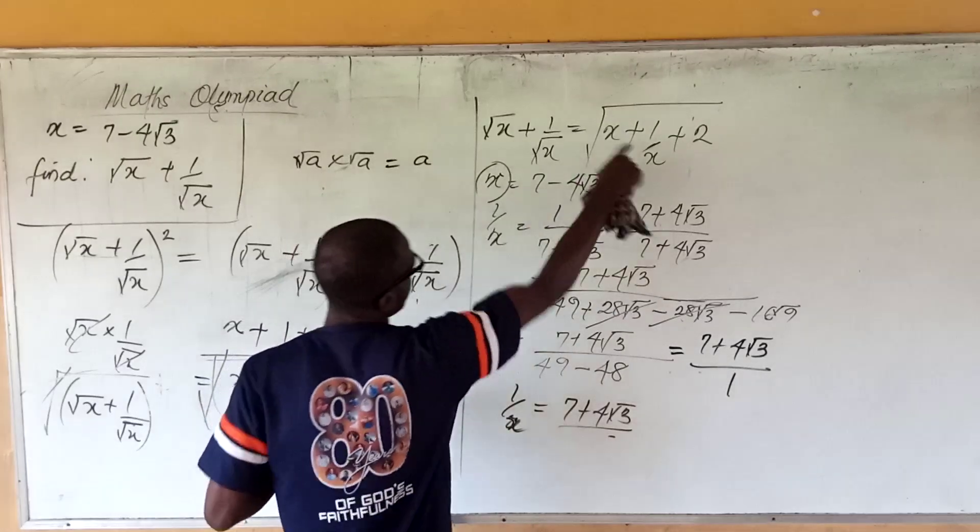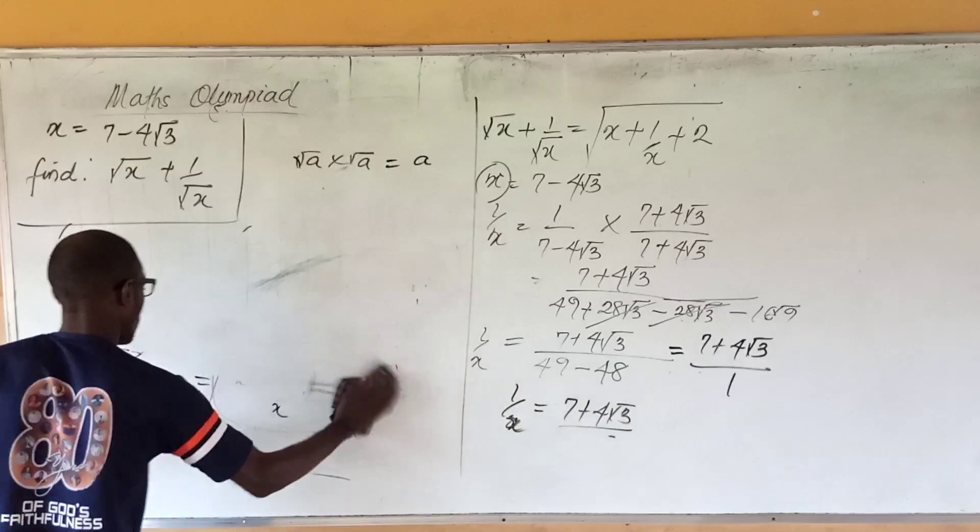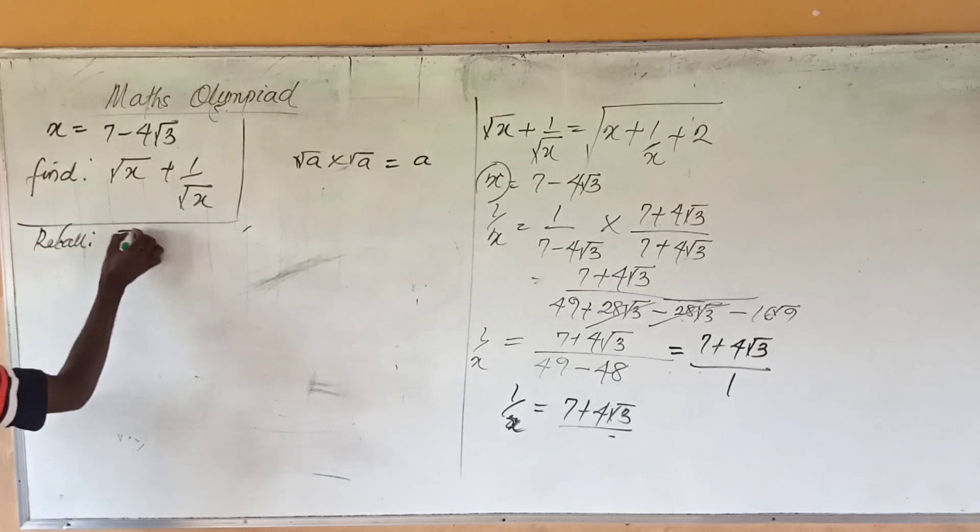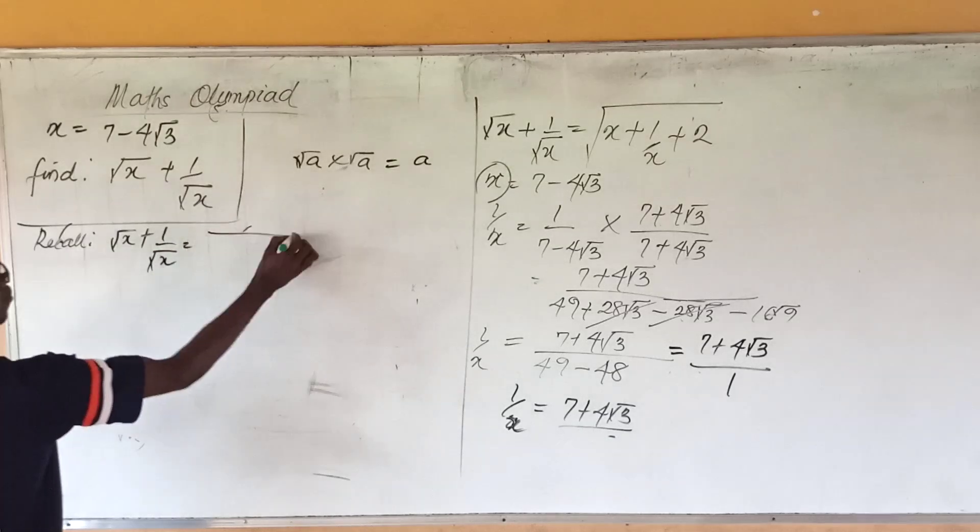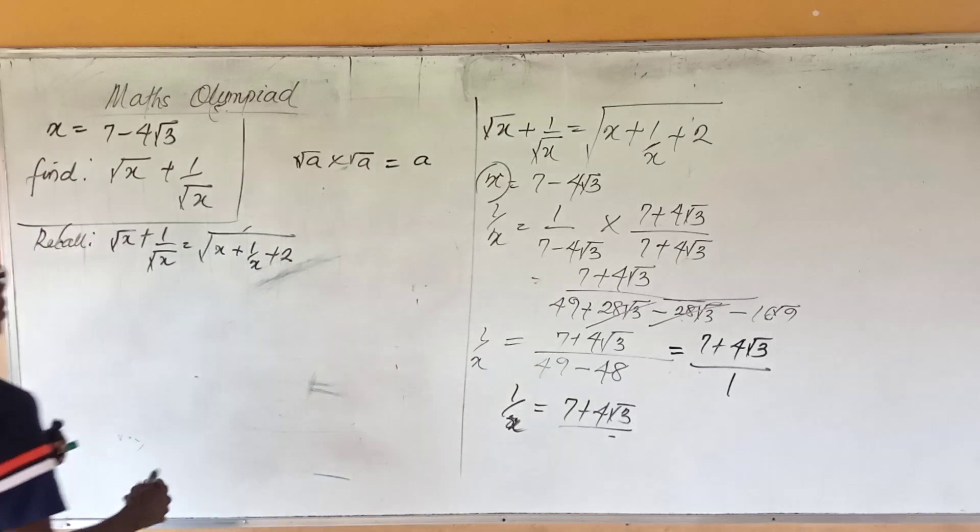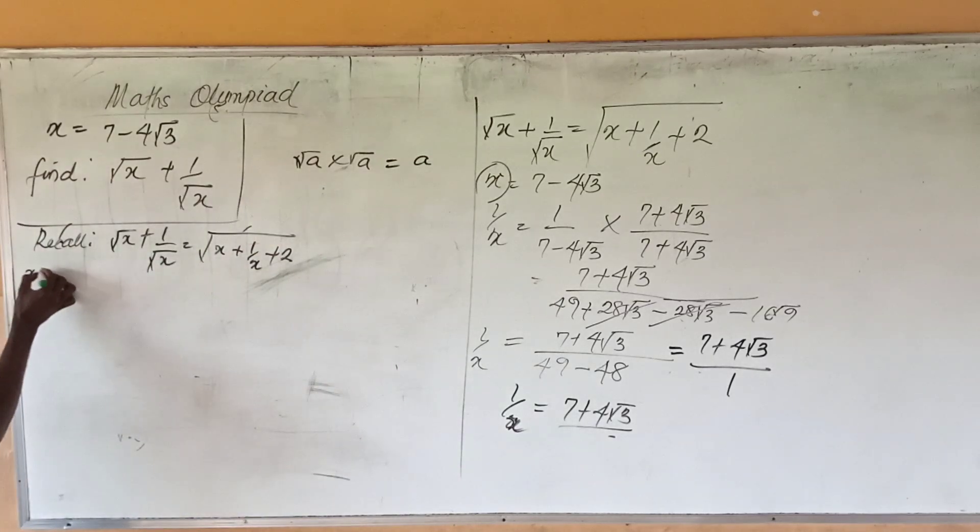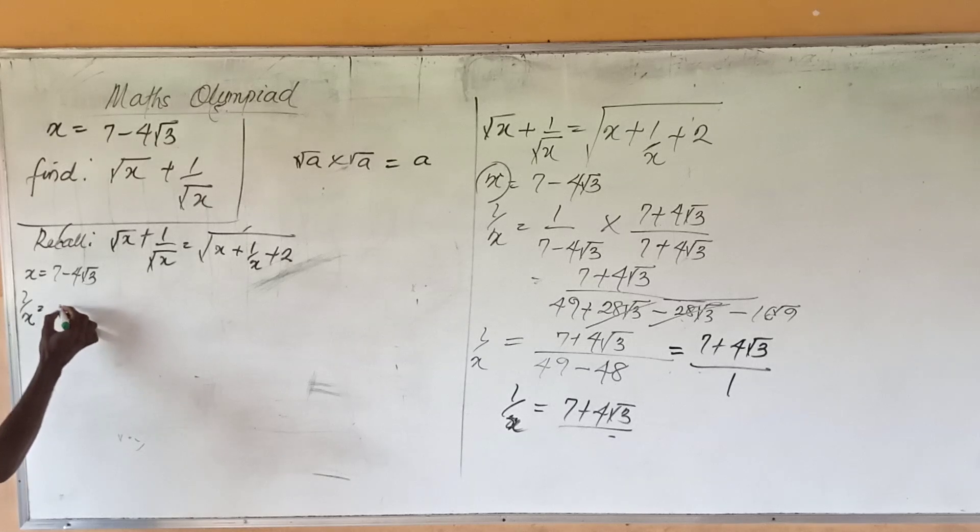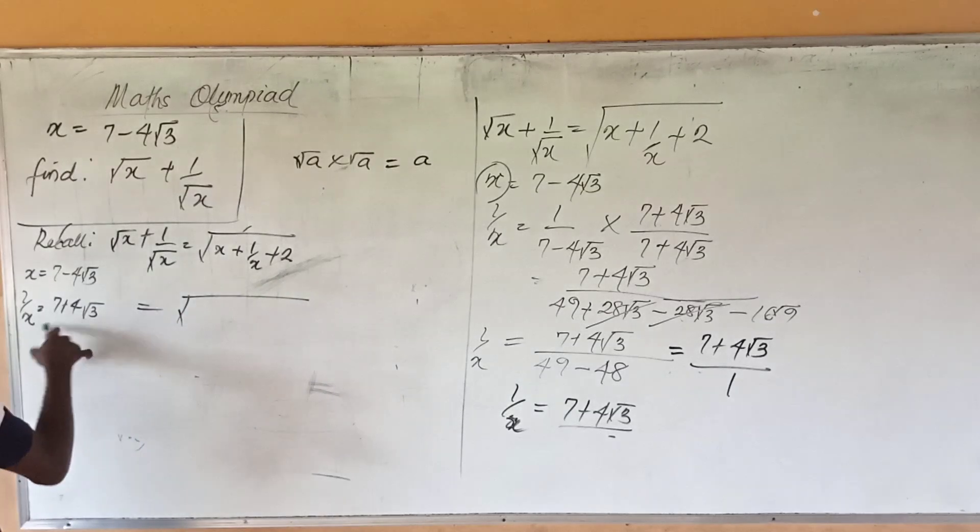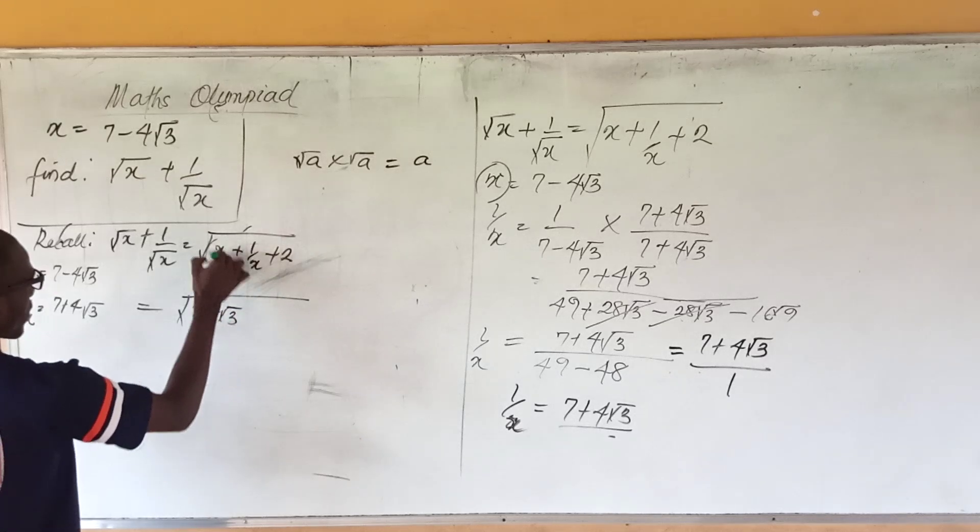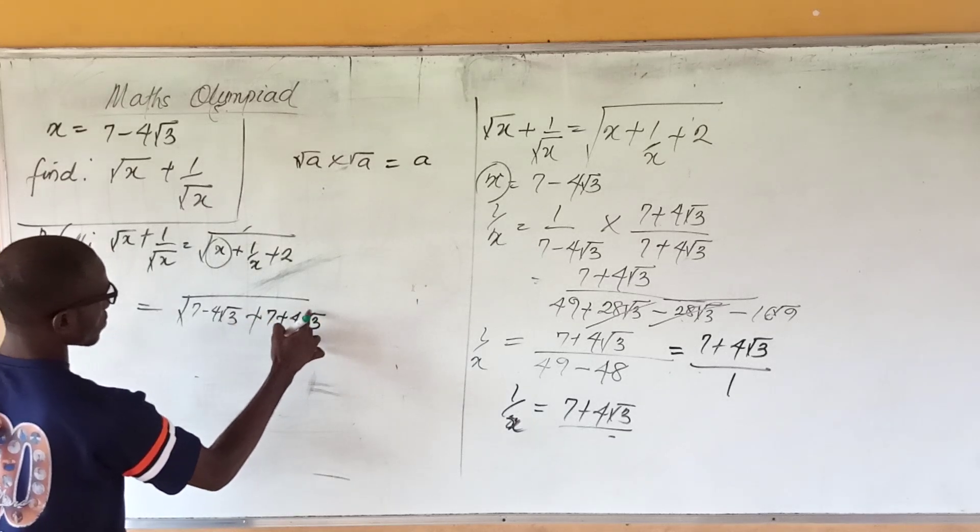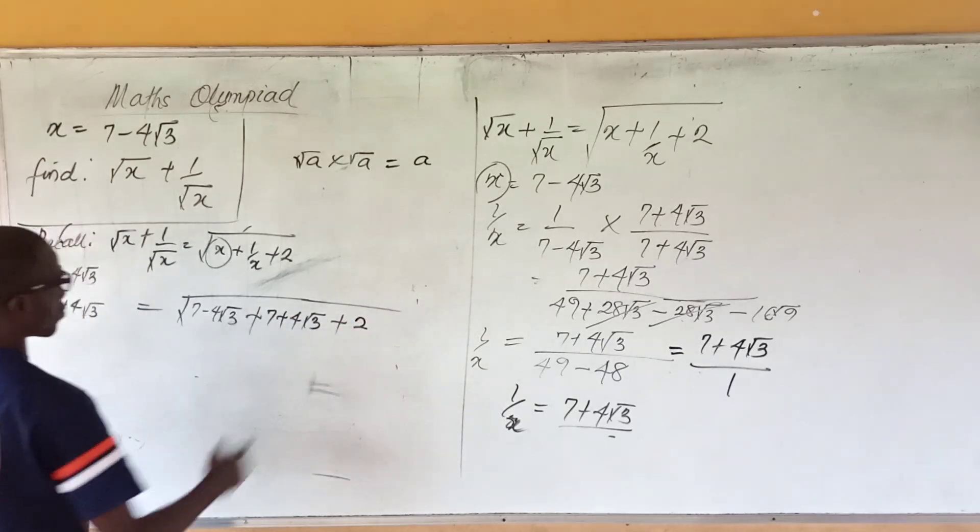So now we can go back to this having gotten our expression for this and for this. Let's recall that √x + 1/√x is equal to the square root of x + 1/x + 2. So this becomes square root of 7 - 4√3 which is our x, then plus 1/x which is 7 + 4√3, is that okay? Then plus 2.